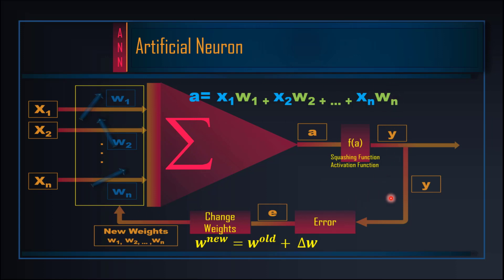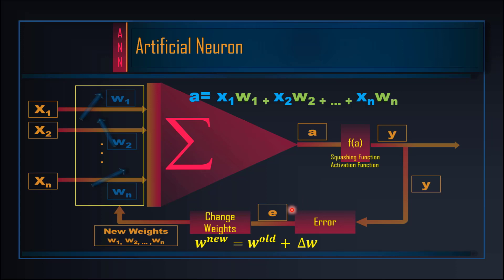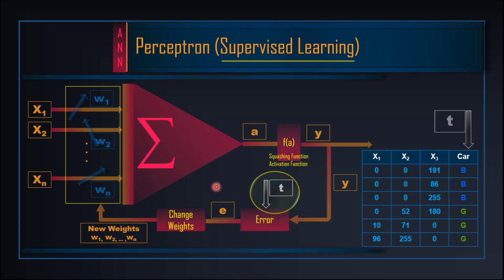ہم learning phase کے اندر continue کرتے جاتے ہیں جب تک ہم satisfy نہ ہو جائیں کہ ہمارے neuron نے learn کر لیا ہے۔ جو ہمارے پاس classroom examples ہیں، ہم error کو zero کر لیتے ہیں اور دیکھتے ہیں کہ کیا تمام inputs کے لیے error zero ہو جاتا ہے۔ Real life میں ہم ایک terminating condition رکھتے ہیں کہ کم از کم اتنا minimum required error achieve ہو جائے۔